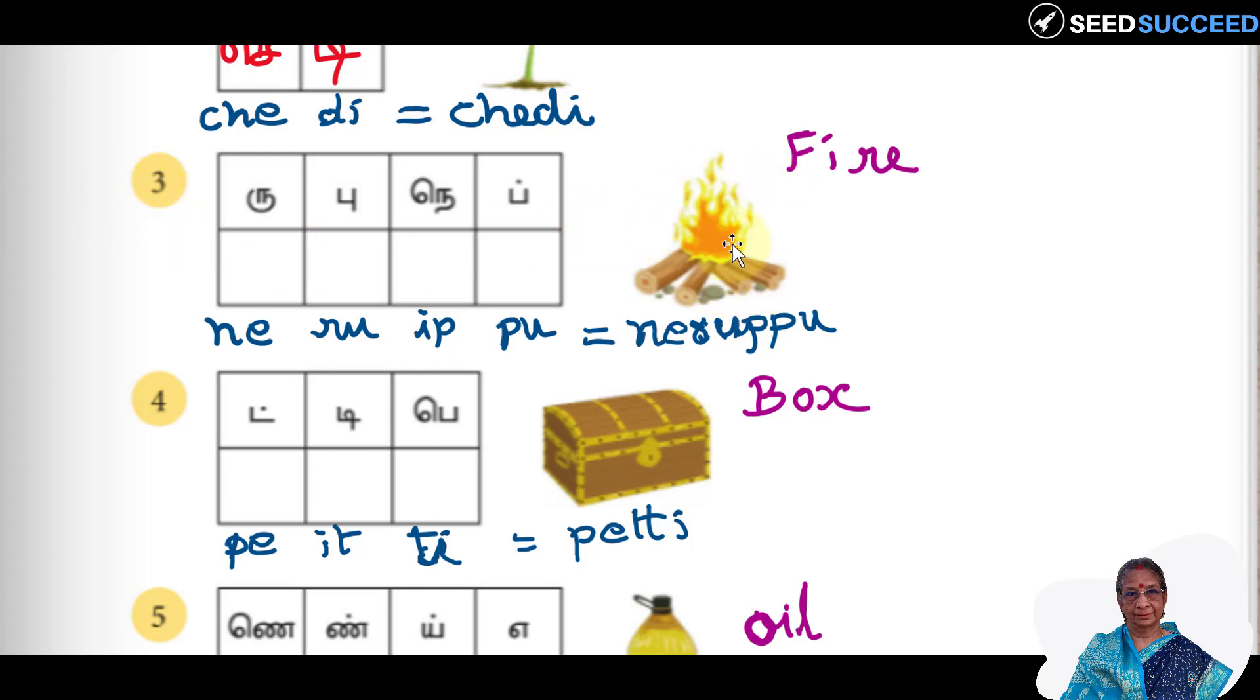The third word is, see the picture, fire. Fire will say it in Tamil as nerupu. Some other way, nerupu, tea, anal, tunnel, everything denotes the same meaning. See the third picture, it is fire. In Tamil, we will say it as nerupu. Neru, neru, ippu, nerupu.